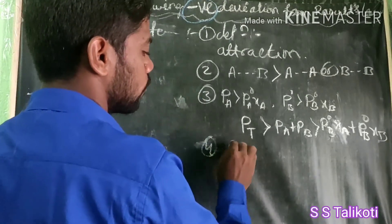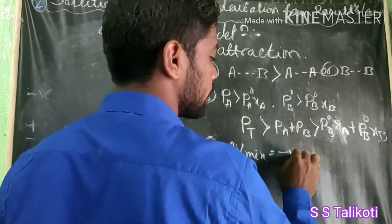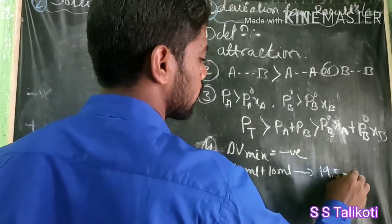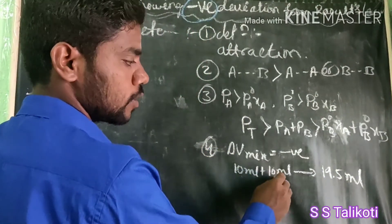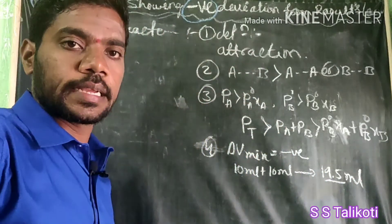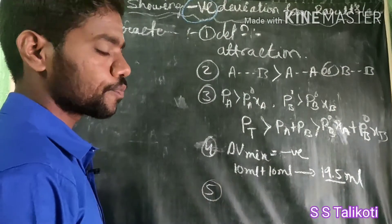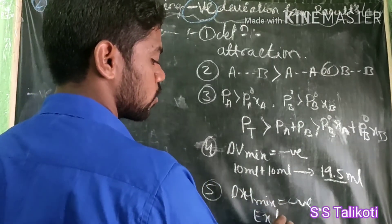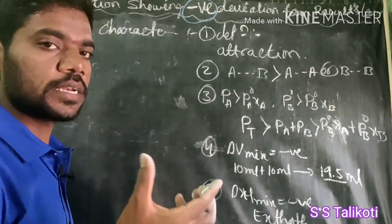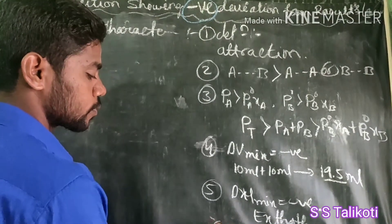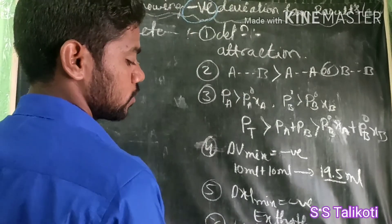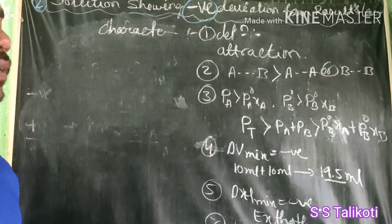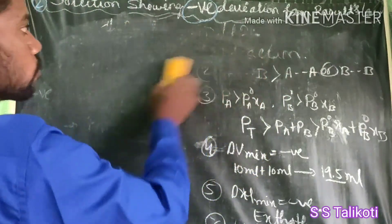The fourth characteristic: ΔV_mix is negative — the volume decreases after mixing. For example, if 10 mL and 10 mL are mixed, it gives 19.5 mL instead of 20 mL, meaning the volume decreases. The fifth characteristic: ΔH_mix is negative, meaning it is an exothermic reaction — heat is liberated, giving a heating effect.